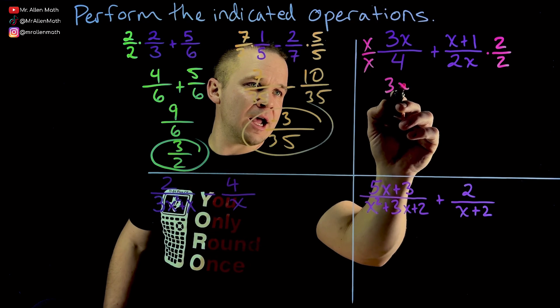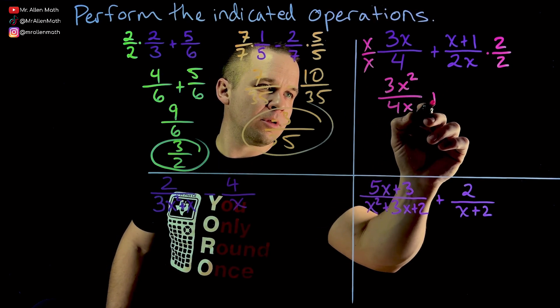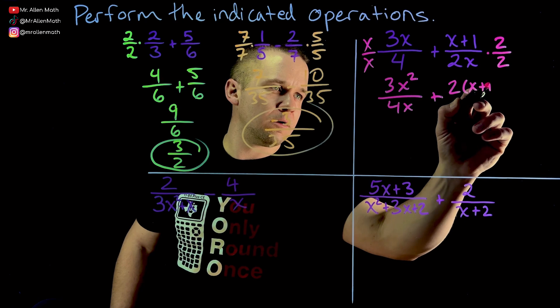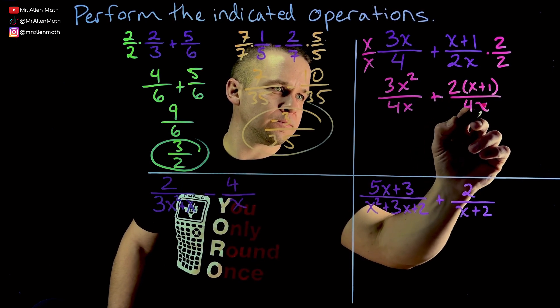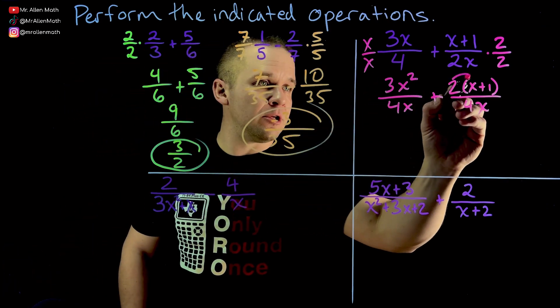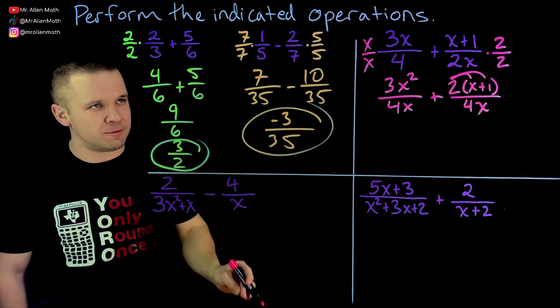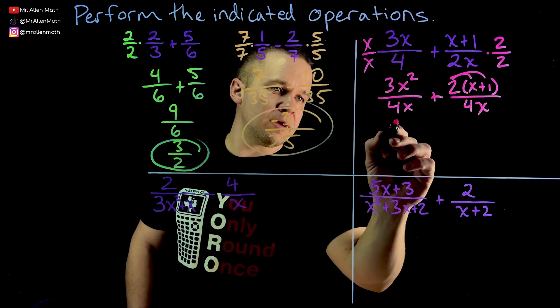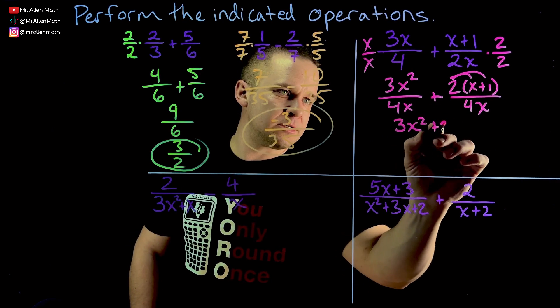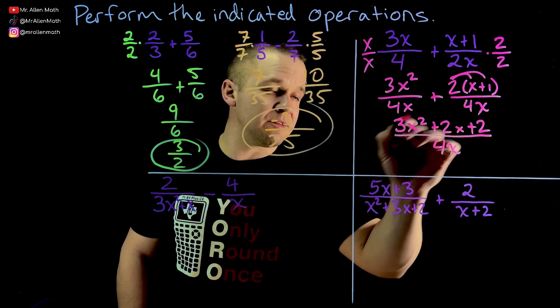Now I'm going to have three X, X times X is squared over four X plus, and here I have two times X plus one. I'm going to write it like this for now over four X. So the reason why I wrote that is because I have to also remember to distribute it. You can do that on the fly. If you'd like, you'd be like, oh, it's two X plus two. Cool. I'm fine with that. Just don't forget to distribute into both of those. All right.